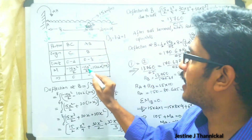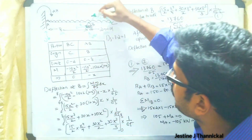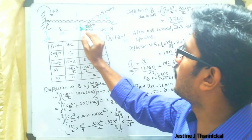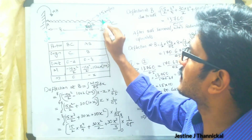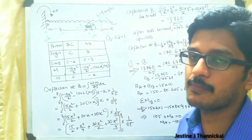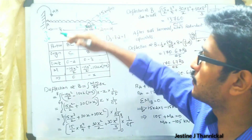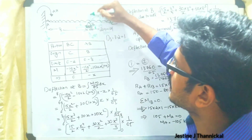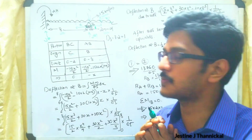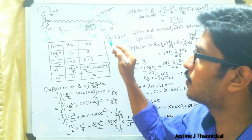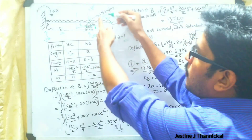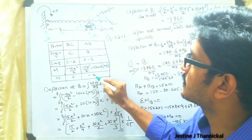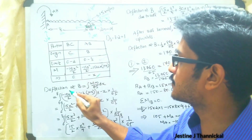For segment AB, the moment from the UDL portion is minus 15x² by 2, and the UDL acts at the center so the distance is (1 + x). That gives the capital M expression. Then, removing all external loads and applying 1 kN unit load at B: in segment BC there is no force acting, so the small m moment is 0. Taking a section in AB, the small m value is just minus x.